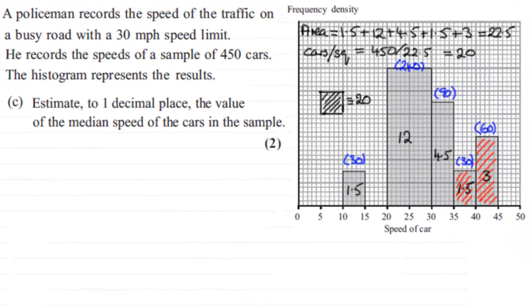Well, in this next part, we've got to estimate to one decimal place the value of the median speed of the cars in the sample. And again, I think this is still a question that I haven't actually seen before many times in histograms. So it's a good one to try. If you'd like to do that, just pause the video and come back when you're ready and we'll run through the solution.